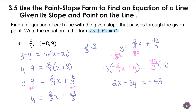I suggest using a scientific calculator. You can use the fraction key to compute negative 3 times negative two-thirds, and negative 3 times 43 thirds. That makes working with fractions easier if you're confused about them.